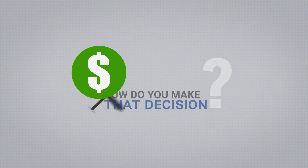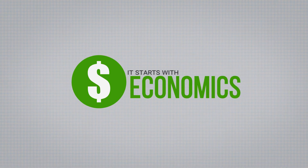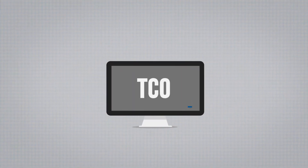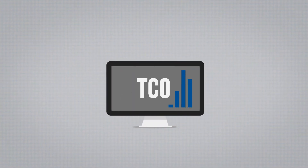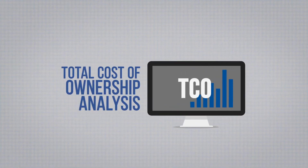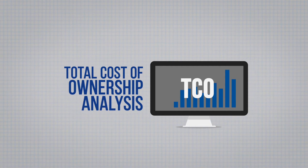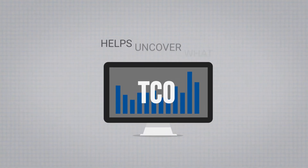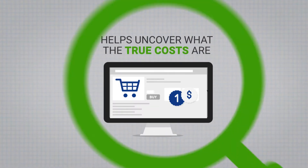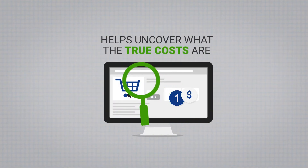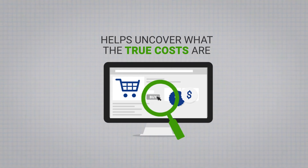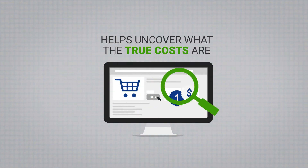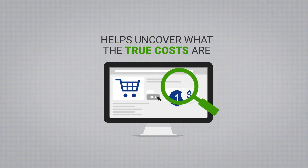Well, it usually starts with economics, which often means a TCO, or total cost of ownership, analysis. TCO is a process that helps uncover what the true costs are for a product or service, including the invisible costs — not just the sticker price.